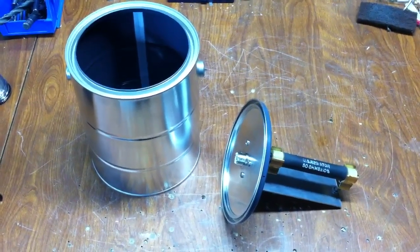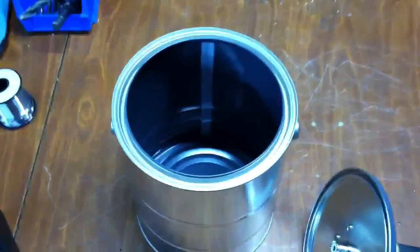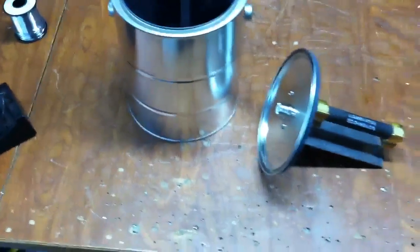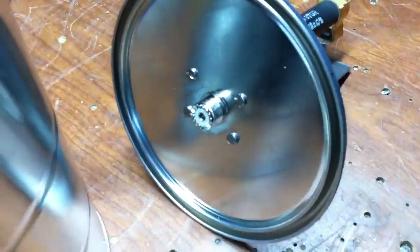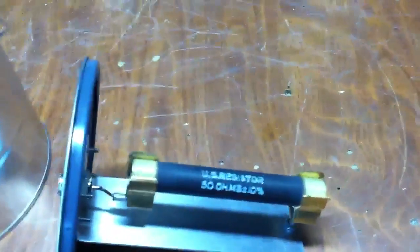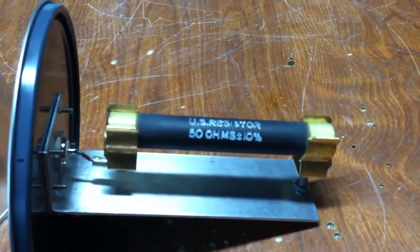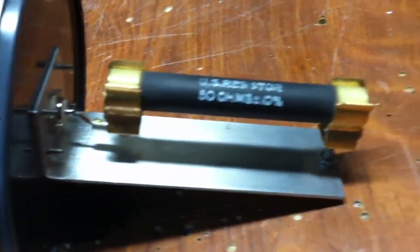Today we have a nice little homebrew dummy load project. This paint can you can pick up at any do-it-yourself warehouse. Materials needed: an SO-239 connector, a 50 ohm non-inductive 100 watt resistor. Ground one end and connect